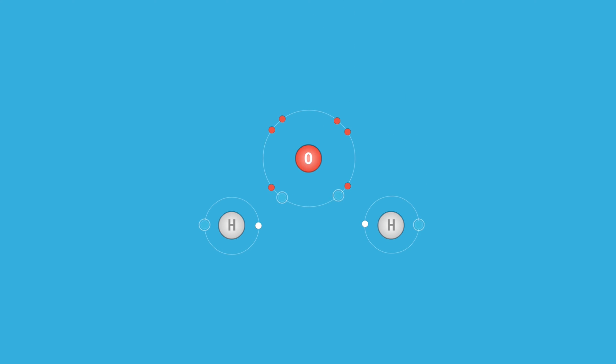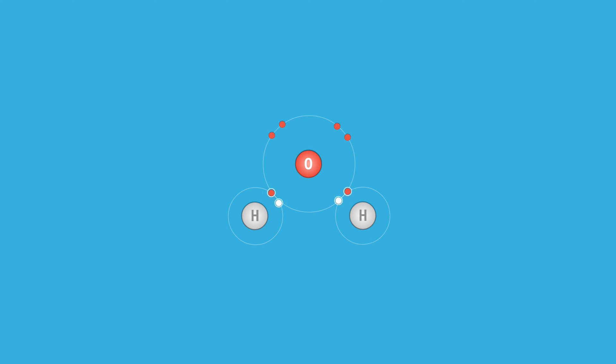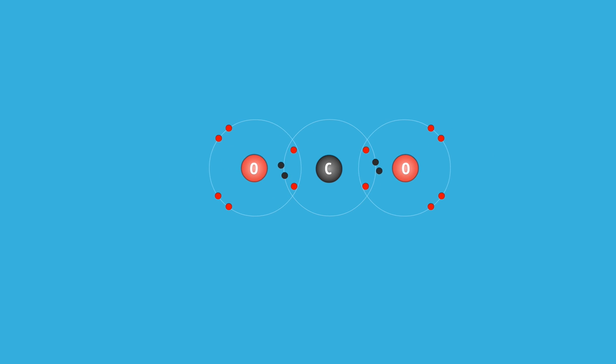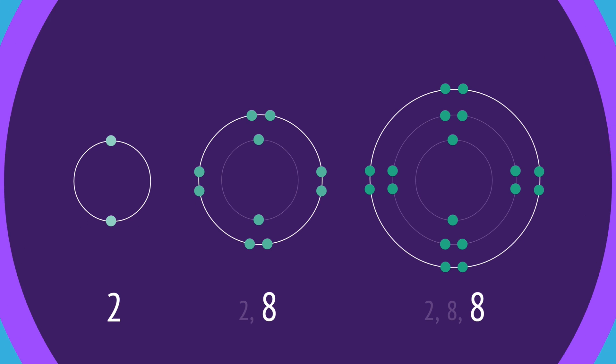Nonmetals will also share electrons with other nonmetals to complete their shells. Each of these hydrogen atoms has one electron and needs one more to complete the shell. By sharing their electrons, they complete these shells, forming a molecule of hydrogen. An oxygen atom shares electrons with two hydrogen atoms, completing the outer shells and forming a molecule of H2O. And a carbon atom shares electrons with two oxygen atoms to complete the outer shells and form a molecule of CO2.